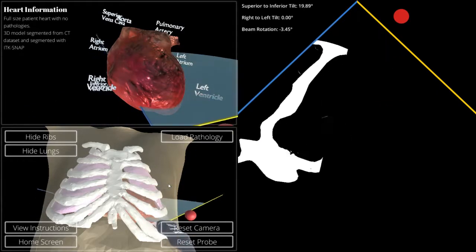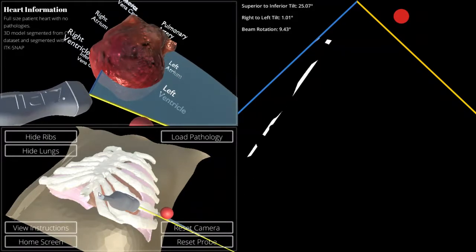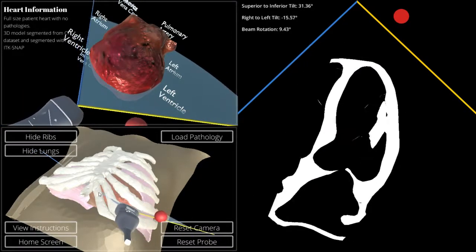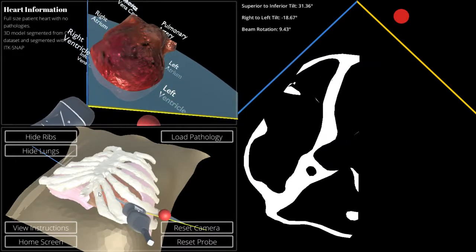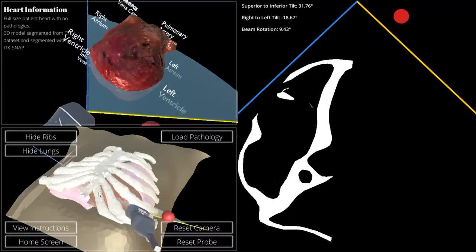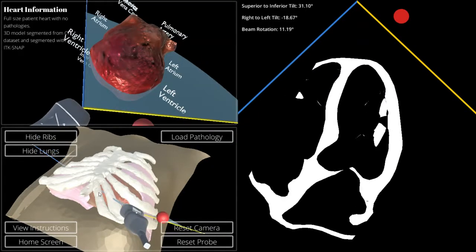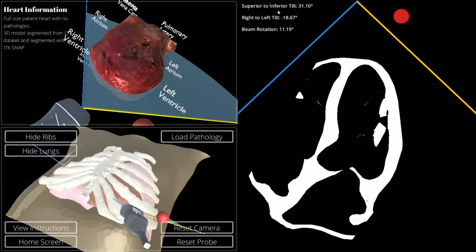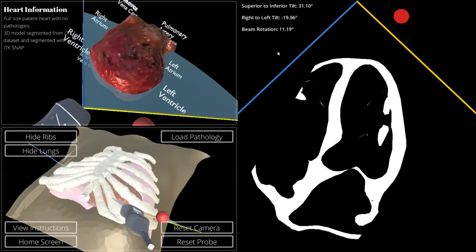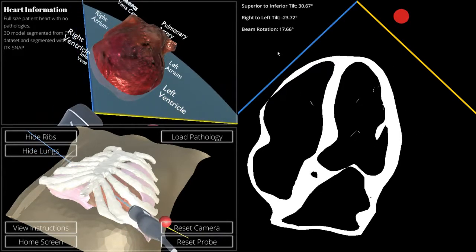However, if we were to try and get the apical four-chamber from the parasternal view, we can certainly do that by positioning it between these two ribs, moving the probe over a little bit, as you would in a normal exam, and then angling it up so that you get the four chambers that you actually want. And there it is. As you can see, our superior to inferior tilt, right to left tilt, and the beam rotations all change dynamically as well, so that you can always position yourself within the heart and know exactly where you are.